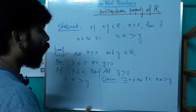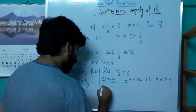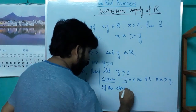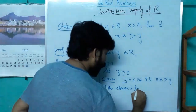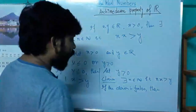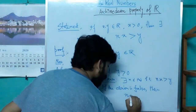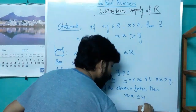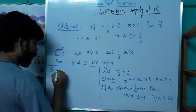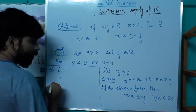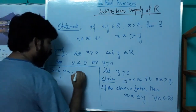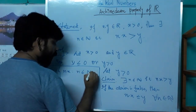If the claim is false, then n·x is less than or equal to y for all n. Now we construct a set S as the collection of all n·x, where n belongs to ℕ.